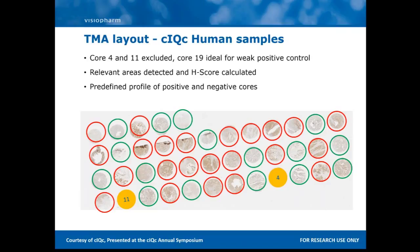The first part of image analysis is to detect the relevant areas, and then calculate a score that can represent the positivity of a single TMA core. For this, we use the H-score, which I'll come into more detail on later. When we've calculated the H-score for each of the TMAs, we create what we call a staining profile — which essentially tells you the reactivity achieved in each of the cores — and we can compare those profiles calculated by our algorithms to the profiles created by the CIQC.